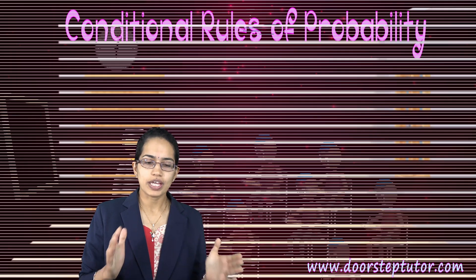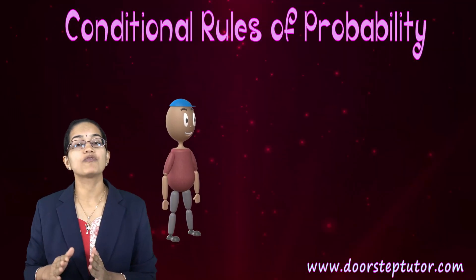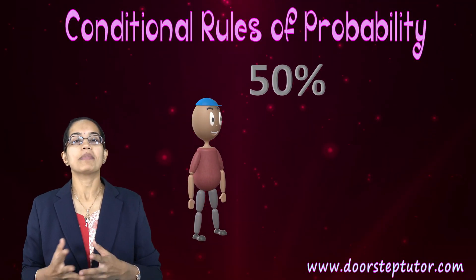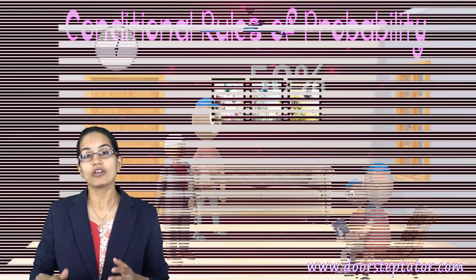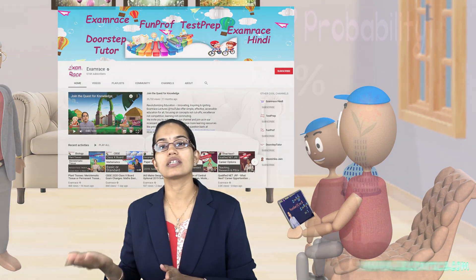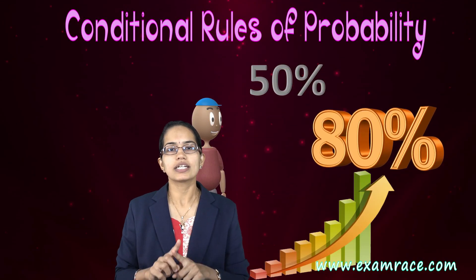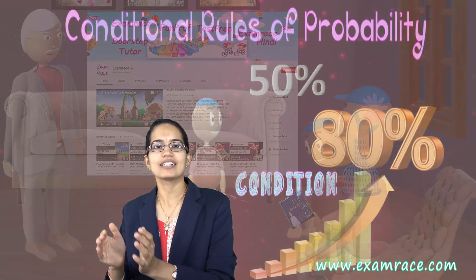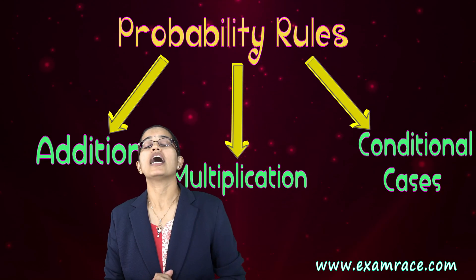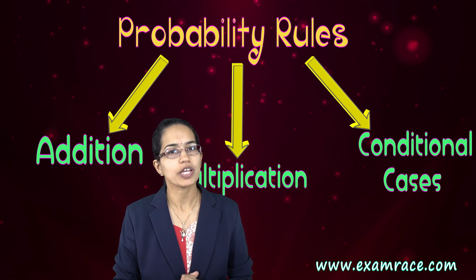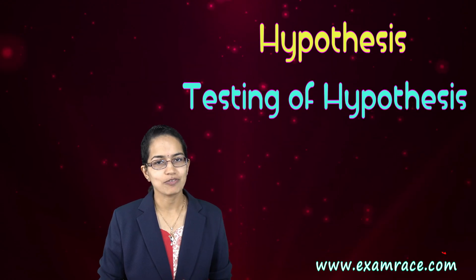The last is the conditional rule. Passing an examination, there is a 50% chance you would pass. But if you are watching exam-prep videos, your chances increase to 80%. That condition — watching the exam-prep videos — is what makes this conditional probability. These are the basic rules of probability, which is one of the very essential parts of inferential statistics. We'll continue our journey with statistics; the next topic will be hypothesis and testing of hypothesis.